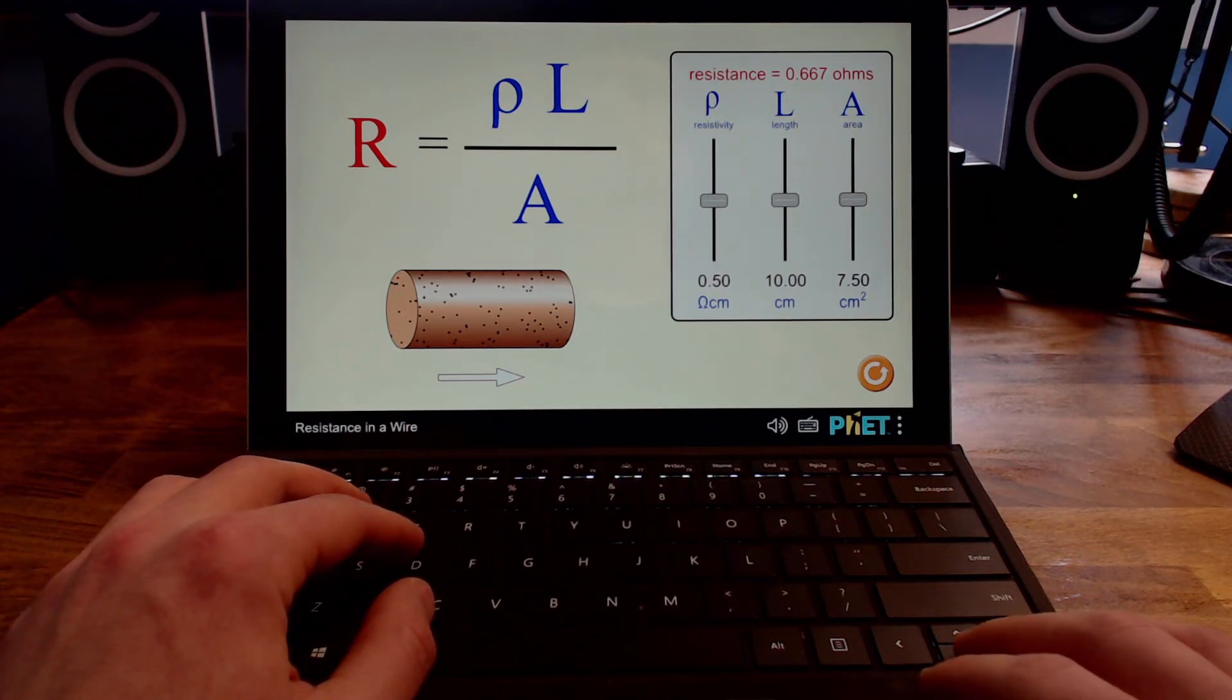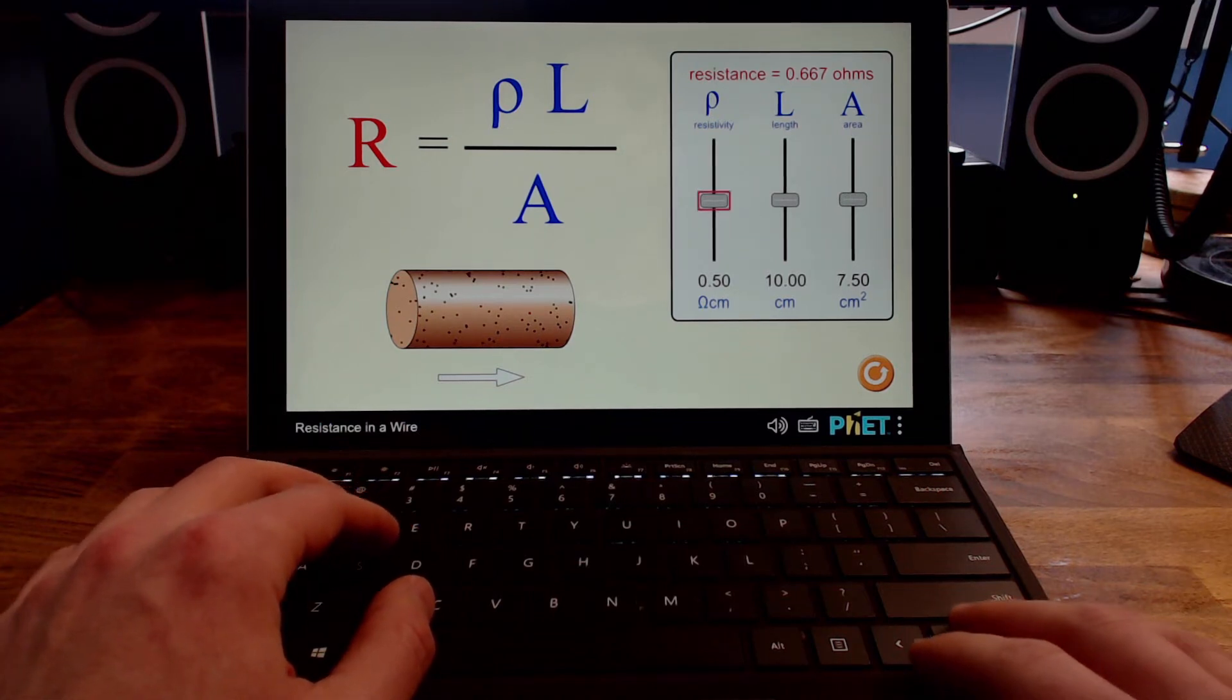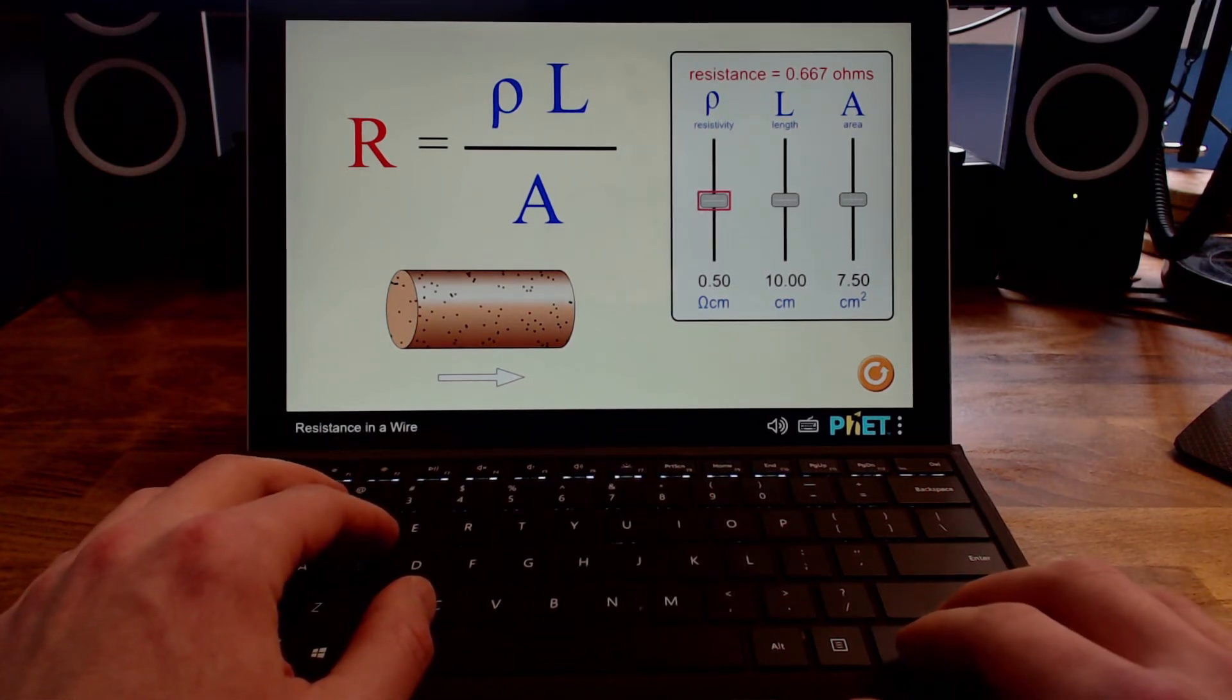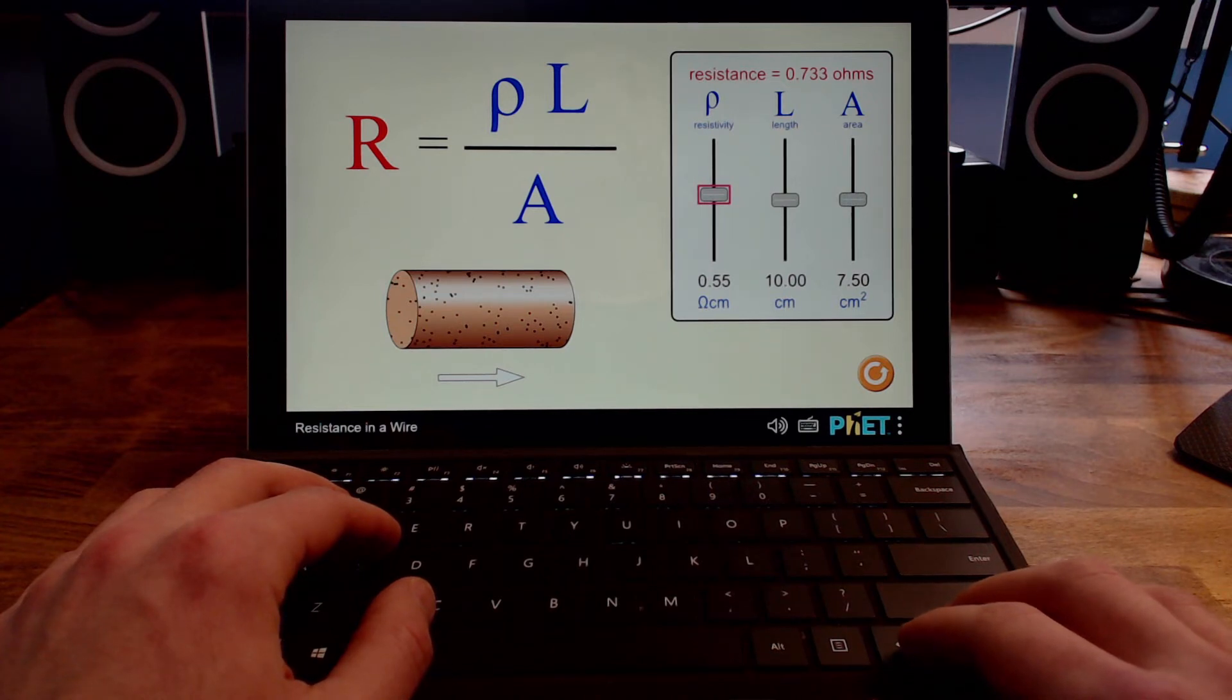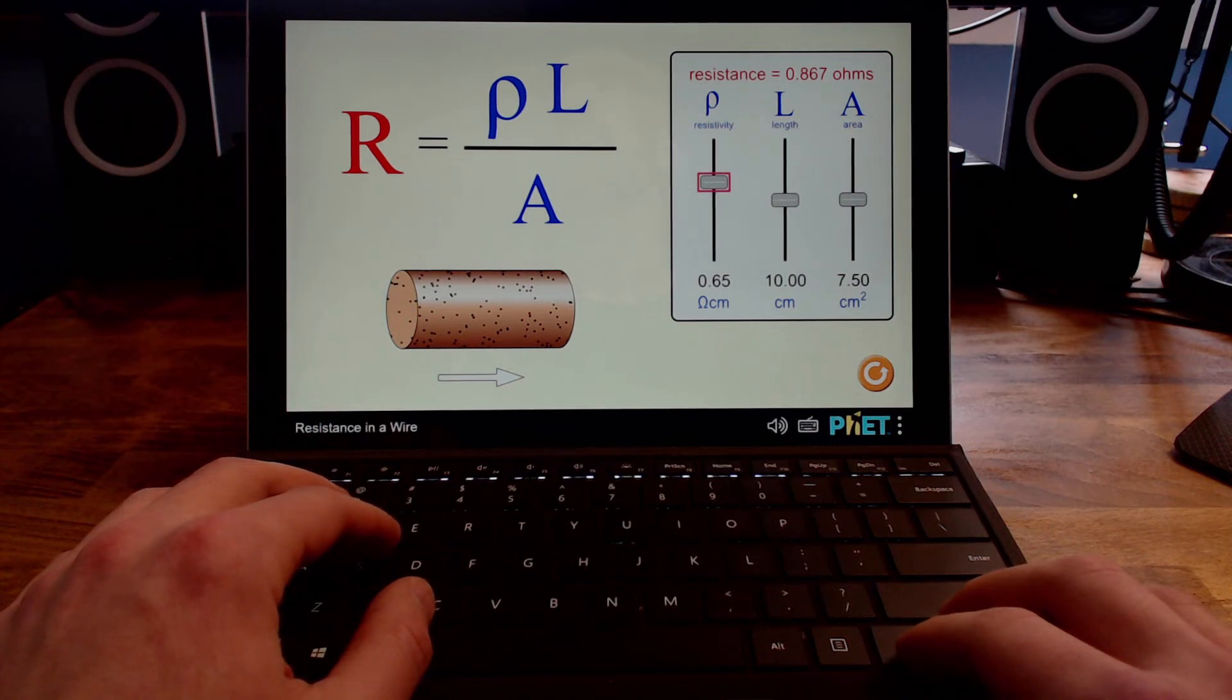Now, let's change something. Listen for the responsive descriptions letting me know what's changed. I'll Tab, which leaves Browse Mode, and focus the Resistivity slider. Then, I'll increase it a bit. Rho, Resistivity slider 0.5 ohm centimeters. 0.55 ohm centimeters. As letter rho grows, letter R grows. Resistance now 0.733 ohms. 0.65 ohm centimeters. As letter rho grows, letter R grows. Resistance now 0.867 ohms.